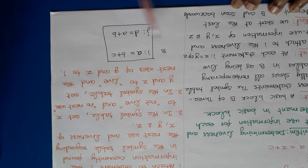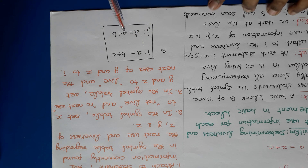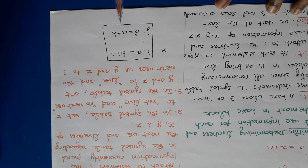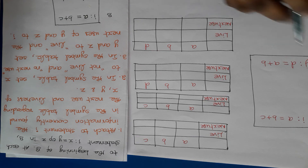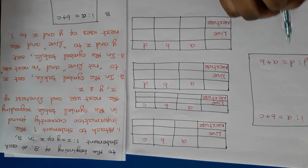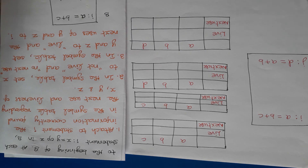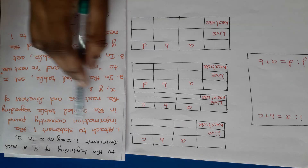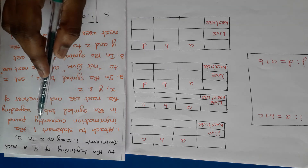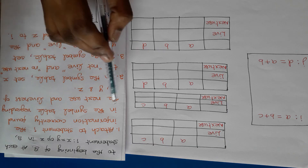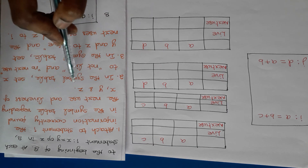Consider this basic block having two statements. We are going to find liveness and next use information about all the variables. The algorithm is a backward scan algorithm, so we start with statement j. First, we find liveness and next use information of all three variables a, b, and d. As per the first step, we attach to statement j the information currently found in the symbol table regarding next use and liveness of x, y, and z.